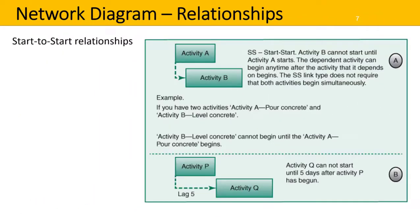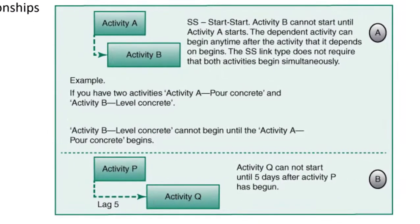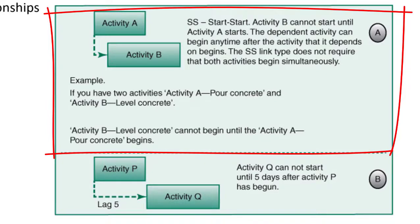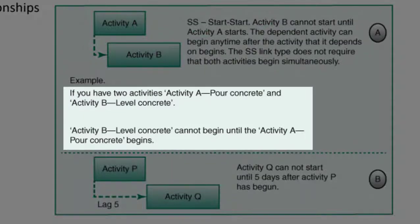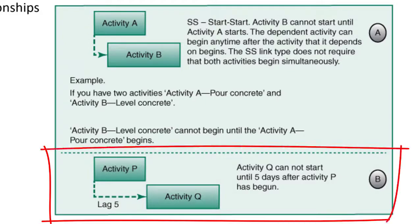Here we look at start-to-start relationships. At the top, A: activity B cannot start until activity A starts. The dependent activity can begin any time after the activity that it depends on begins. The start-to-start link type does not require that both activities begin simultaneously. For example, activity A is pour concrete and activity B is level concrete — activity B cannot begin until activity A begins. And for B, activity Q cannot start until five days after activity B has begun, showing that lag.